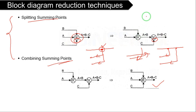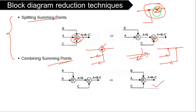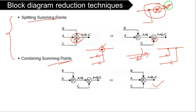One more important point: interchanging of summing point and takeoff point. Do not attempt this rule — it is a very difficult rule. If you cannot resolve the block diagram using the other rules, you can try this as a last resort. In the coming lectures, we will solve one or two examples to apply all these rules.